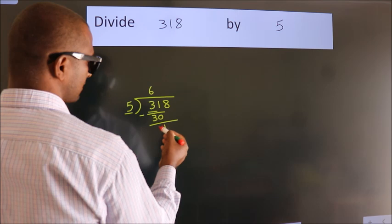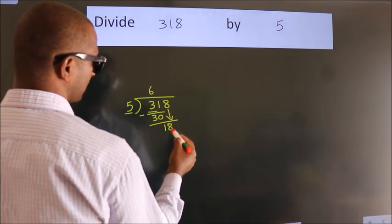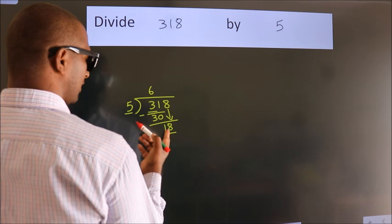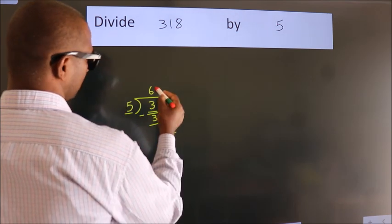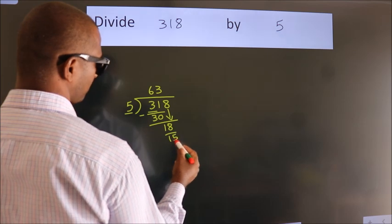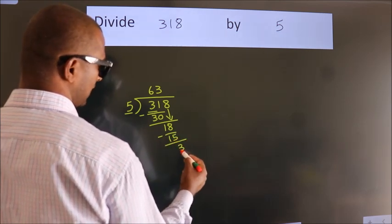After this, bring down the next number. So 8 down. So 18. A number close to 18 in the 5 table is 5 times 3, which is 15. Now, we subtract. We get 3.